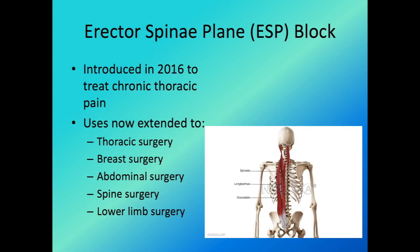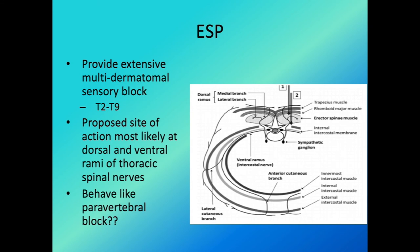The erector spinae plane block was introduced in 2016 as a case report of just two cases of chest wall pain. Since then it has been used for thoracic surgery, breast surgery, abdominal surgery, spine surgery, and even lower limb surgery. It has exploded in recent years because it is considered an easy, minimally invasive alternative to paravertebral block. The mechanism is largely unknown but the postulated theory is that LA spreads to the dorsal and ventral rami of the thoracic spinal nerve.